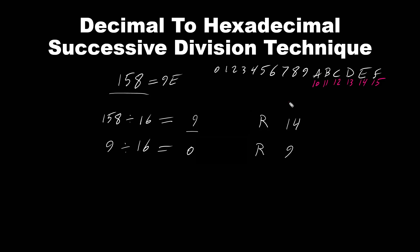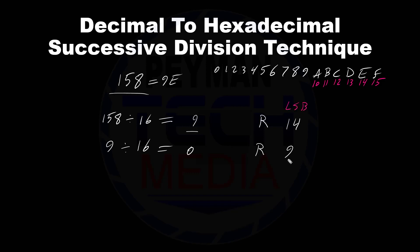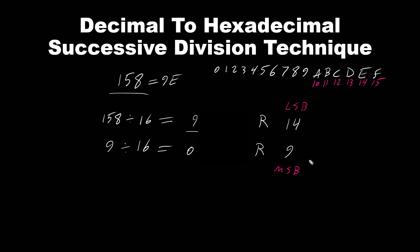So here, to the top is less significant bits and to the bottom is the most significant bits, and we need to write it going from bottom to top. In this case 9, 14, and what is 14? 14 is E, so it is 9E, and as we can see here. So anytime by using successive division technique we can directly convert decimal number to hexadecimal number.